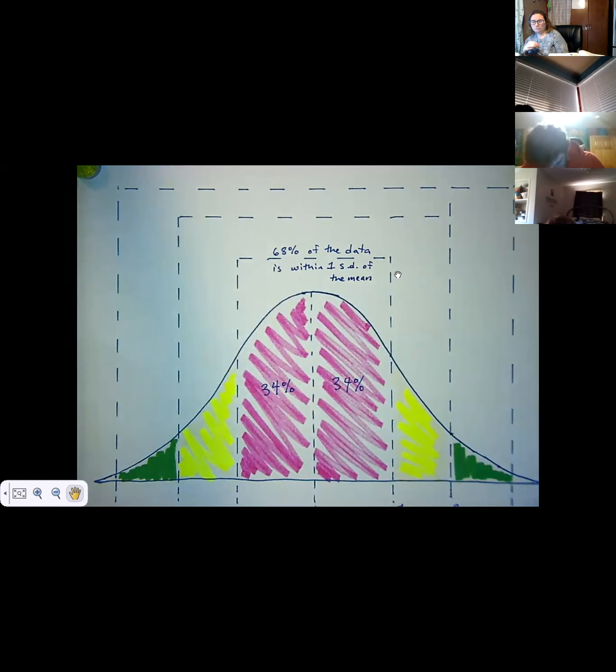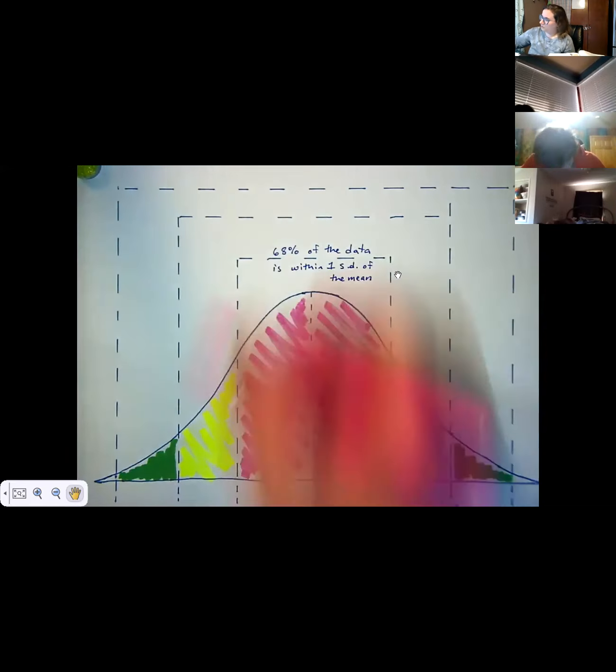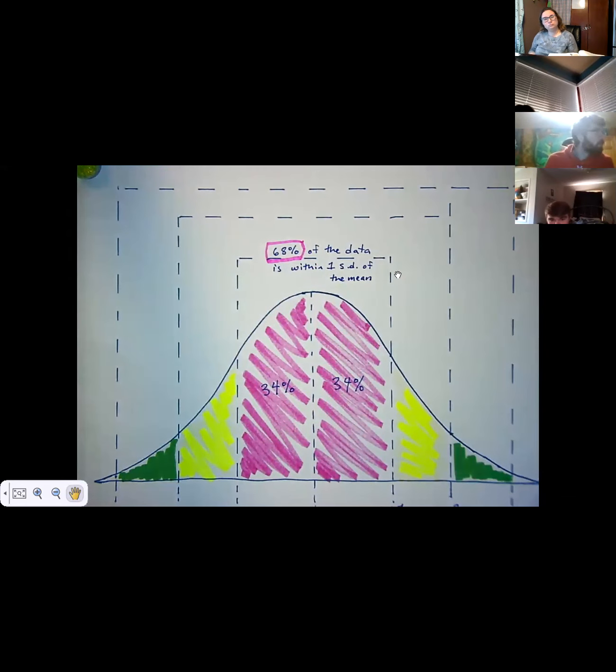that 68% of the data is within one standard deviation of the mean. So that's kind of all that pink part. So if you are using colors, the 68% is the pink stuff for me.